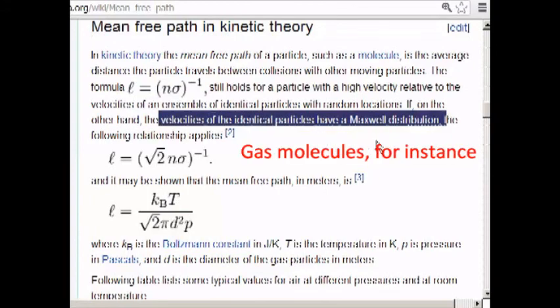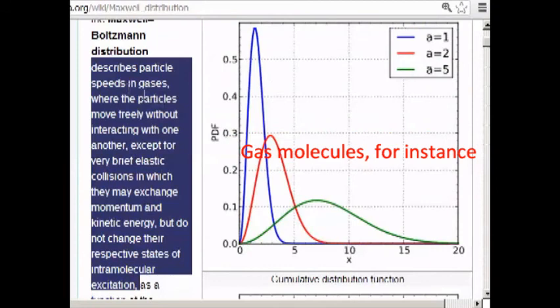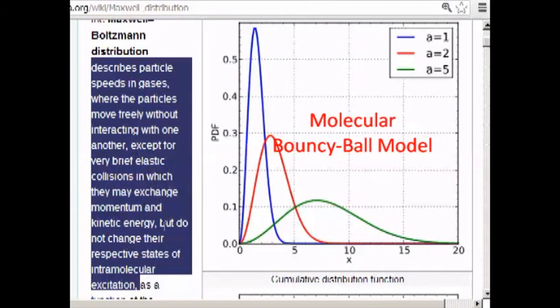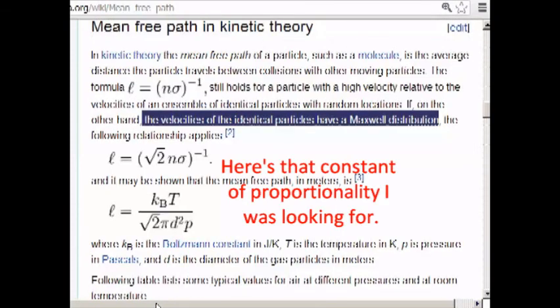If, on the other hand, the velocities of the identical particles have a Maxwell distribution, which describes particle speeds in gases where the particles move freely without interacting with one another, except for very brief elastic collisions in which they may exchange momentum and kinetic energy, but do not change their respective states of intermolecular excitation. In any case, if the velocities of the identical particles have a Maxwell distribution, the mean free path is one over square root of two n sigma.